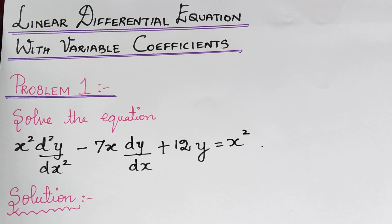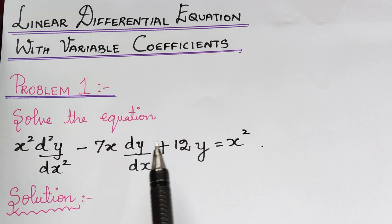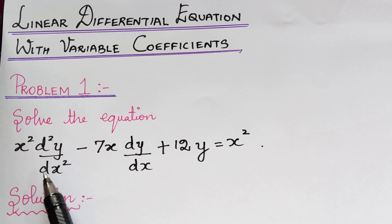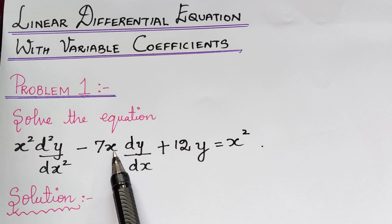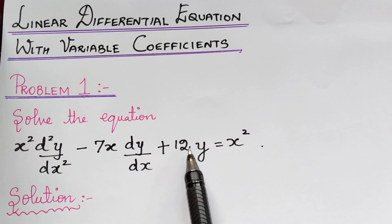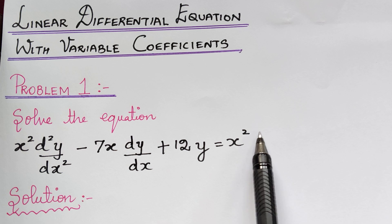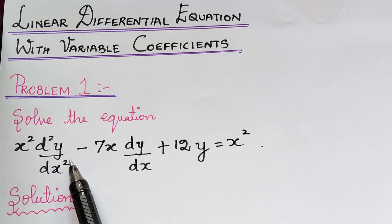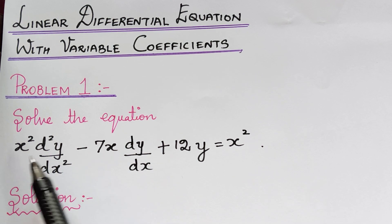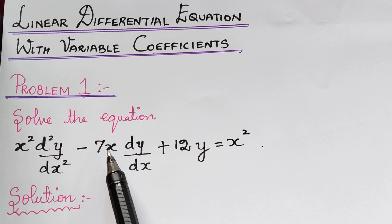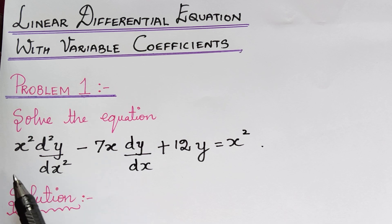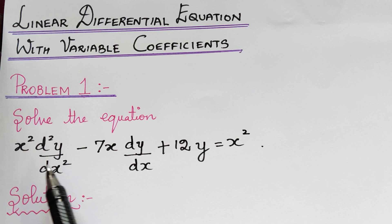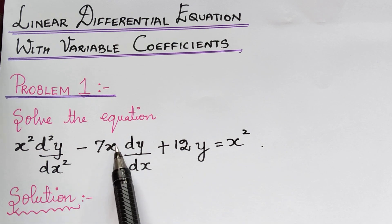Dear students, under the topic linear differential equation with variable coefficients, we are going to solve the first problem. The question is: solve the equation x² d²y/dx² minus 7x dy/dx plus 12y equals x². If we observe, the coefficients of d²y/dx² and dy/dx are variables — x² and minus 7x respectively — and therefore this is a linear differential equation with variable coefficients.